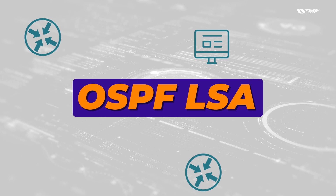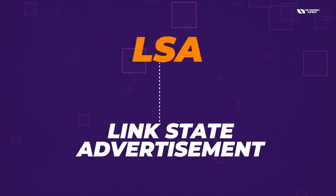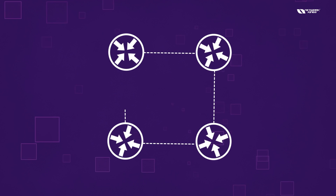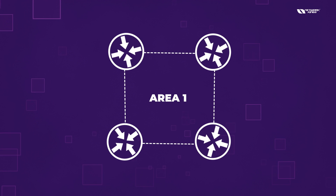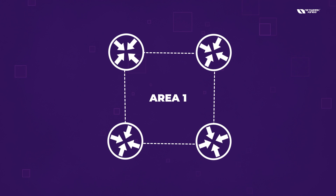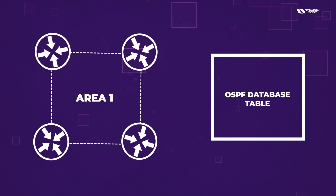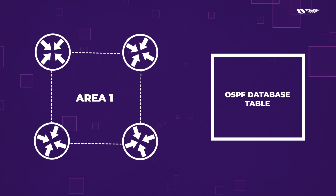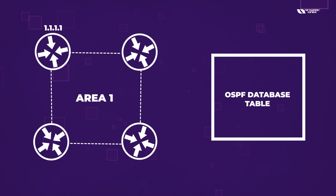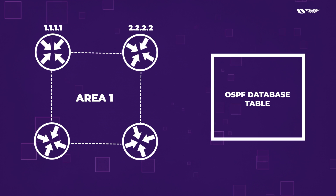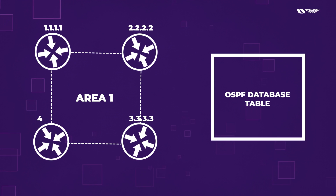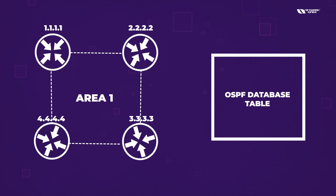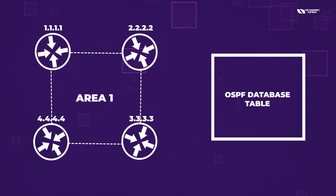The topic is OSPF LSA — LSA stands for Link State Advertisement. There are different types of LSAs. The first is called Router LSA. When you connect four routers within one area, suppose all four routers are in Area 1, these routers will create a table called the OSPF database table. Inside the table, suppose this router ID is 1.1.1.1, this is 2.2.2.2, this is 3.3.3.3, and this is 4.4.4.4.